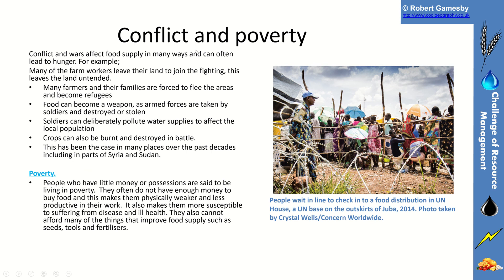Conflict and poverty can also have an impact on how much food is produced and available. In conflict areas, many farmers and their families might be forced to flee and become refugees. Food can be used as a weapon — armed forces take food and can destroy or steal it. Soldiers can deliberately pollute water supplies and burn crops as part of the battle. That's been the case over past decades, including conflicts in Syria and southern Sudan. Poverty also weakens people and makes them less productive for work, which means they can't produce as much food.